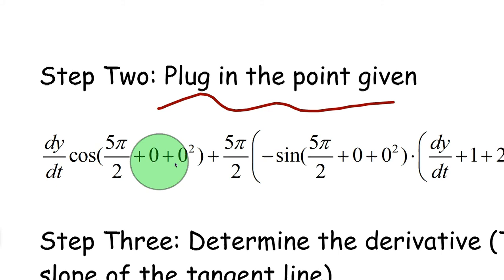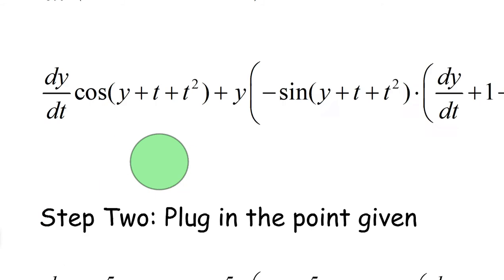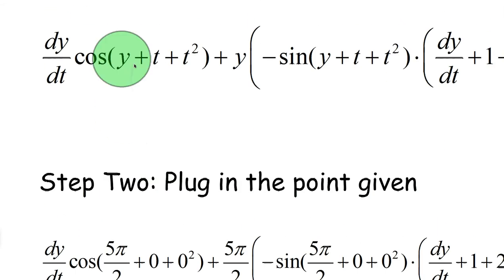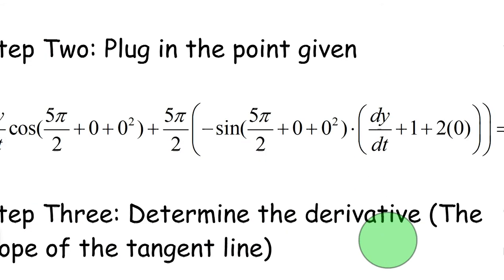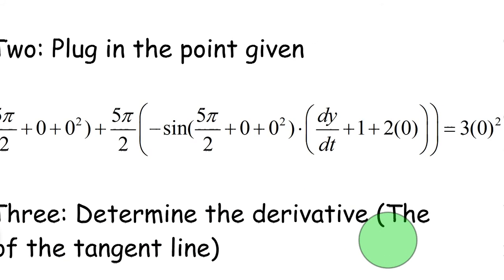Notice the point they gave us was 0, 5π over 2. So, wherever there's a y, I'm going to be replacing with 5π over 2. Wherever there's a t, in this case, that is our independent variable, we're going to plug in 0. That's all we're doing for this step. This is going to become 0, this is going to become 0. A lot of this stuff is going to become 0, and that's why you don't have to get dy dt by itself or dy dx or whatever.